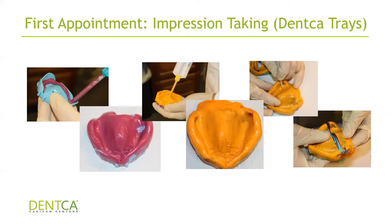Then we're going to do something a little unconventional. We were taught in dental school that once you get those perfect impressions you shouldn't touch them. Well, in this case we're actually going to cut them. Take a number 10 or number 15 scalpel blade and carefully cut through the impression material following the shape of the tray — kind of like when you're opening a flap where you cut through the gums following the shape of the bone. You're cutting through the impression material following the shape of the tray from one side all the way to the other.